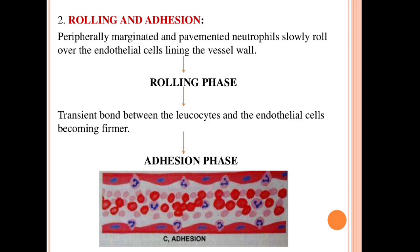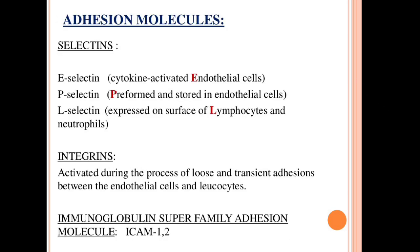Pavemented neutrophils slowly roll over the endothelial cell lining the vessel wall — this is the rolling phase. Then, transient bonds between the leukocytes and endothelial cells become firmer, forming the adhesion phase, mediated by adhesion molecules: E-selectin, P-selectin, and L-selectin.